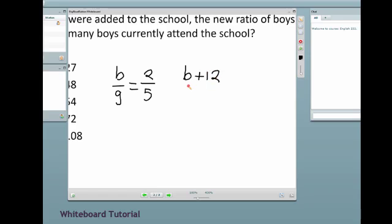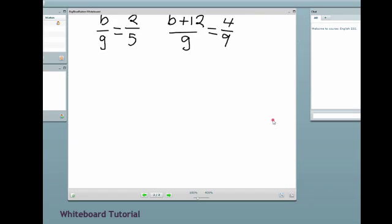...then the ratio to girls, in this case, becomes 4 to 9. Okay, so those are the two equations we just have to solve for boys and girls. Very straightforward.